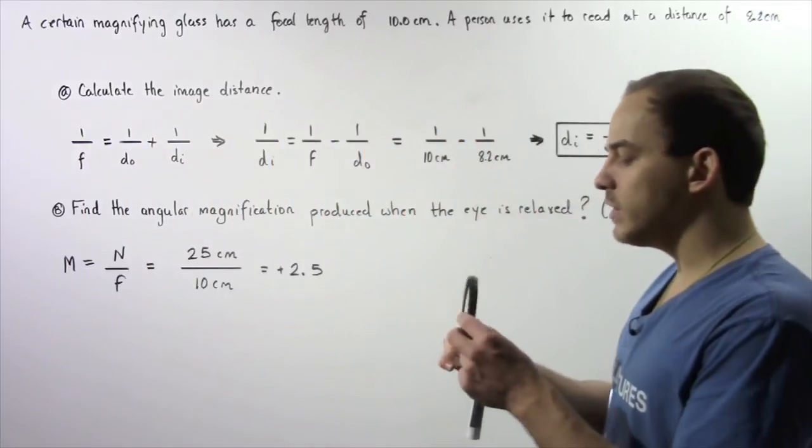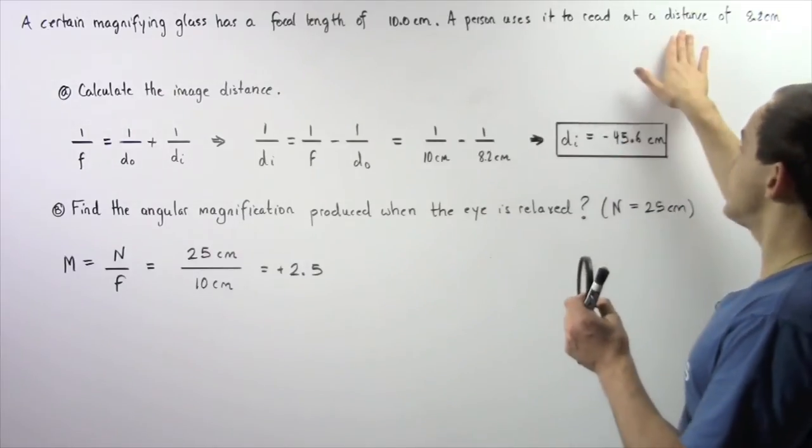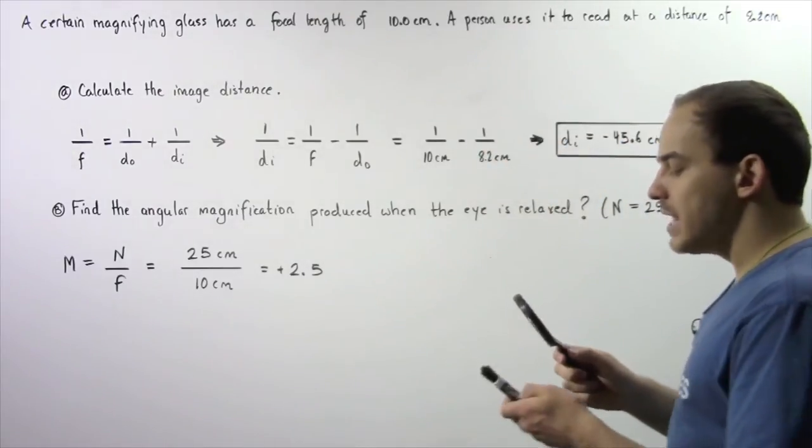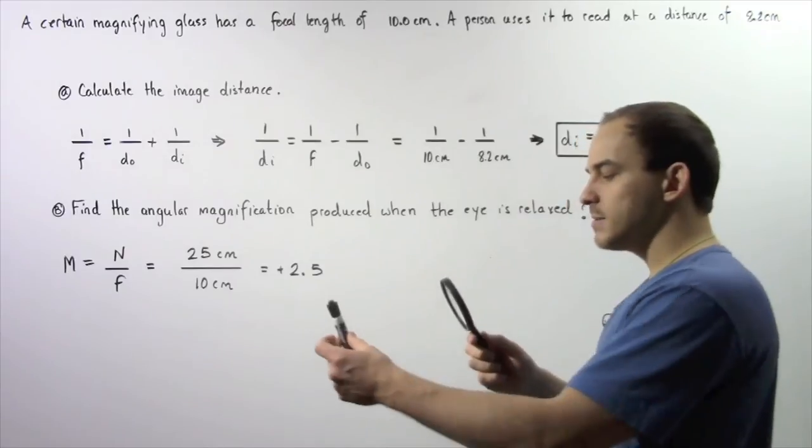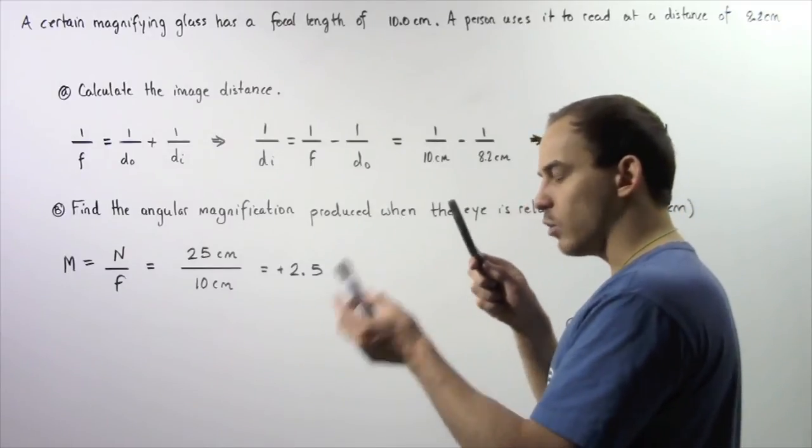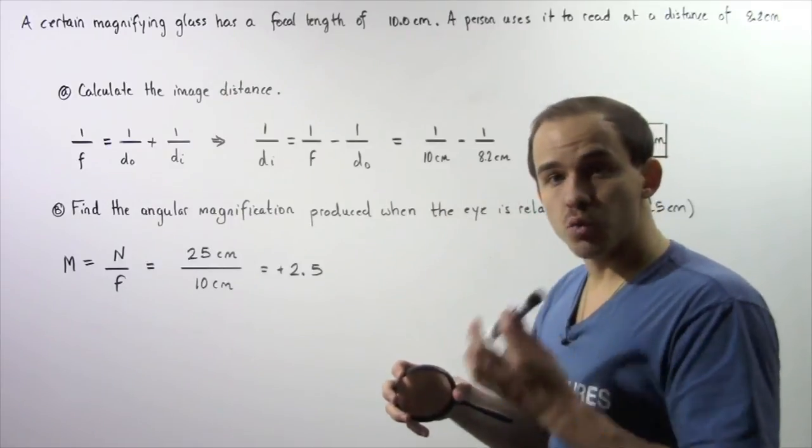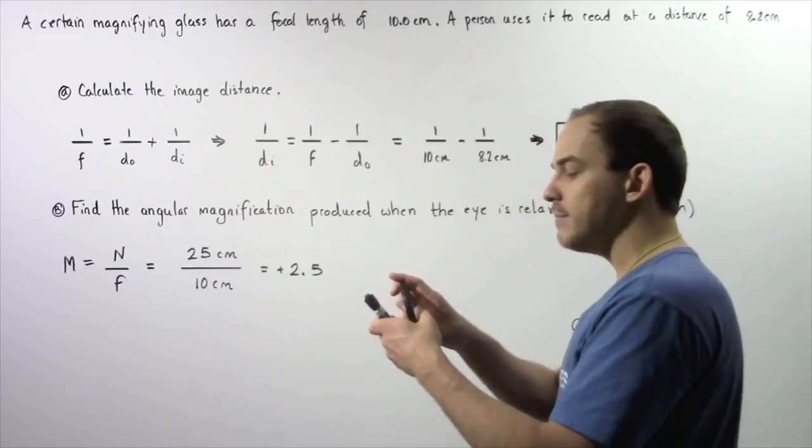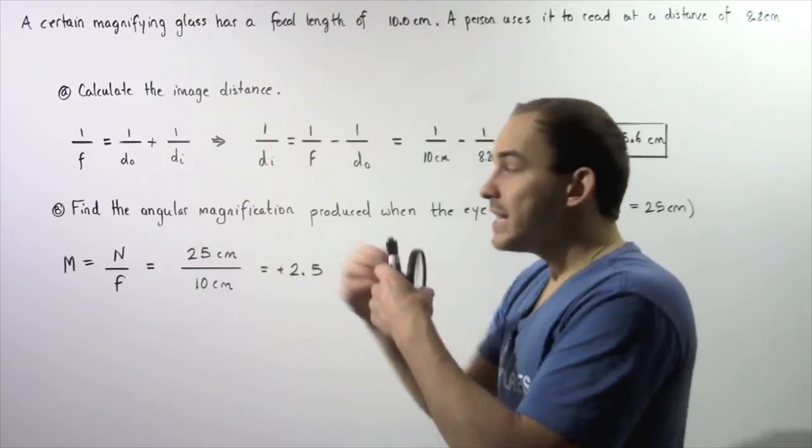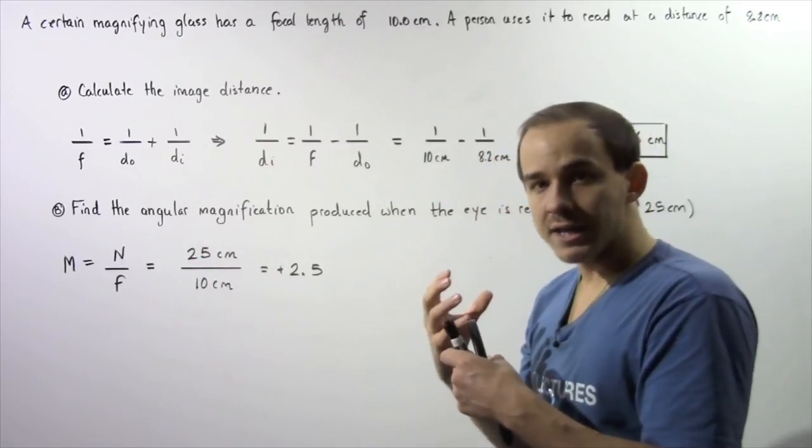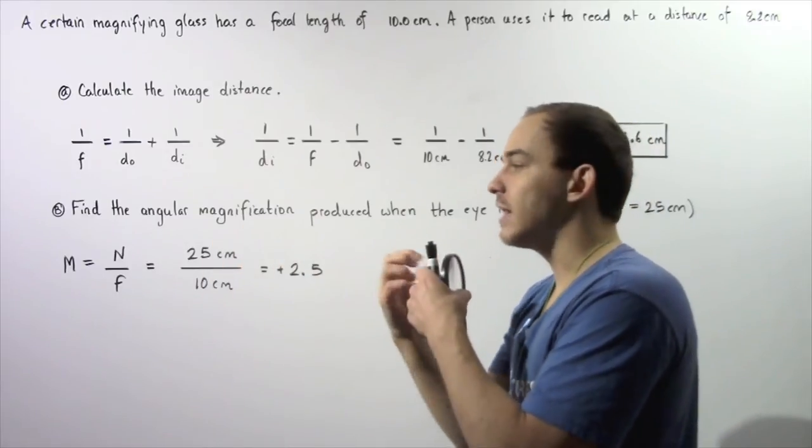Suppose we have the following magnifying glass. This is our object. We place it some distance away as described in the problem. What exactly is the purpose of the magnifying glass and what does it do? Well, suppose I want to examine this object. The magnifying glass creates a virtual image of this object and the virtual image is found somewhere on this side of the object.